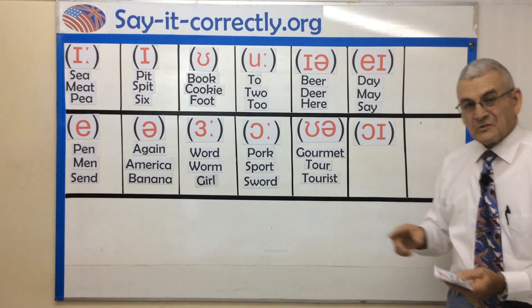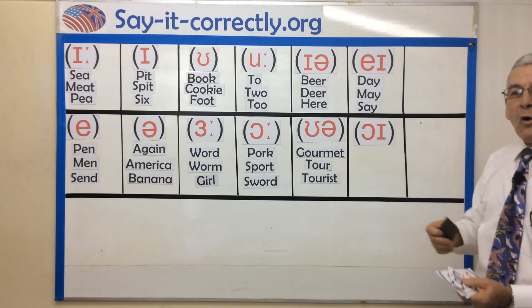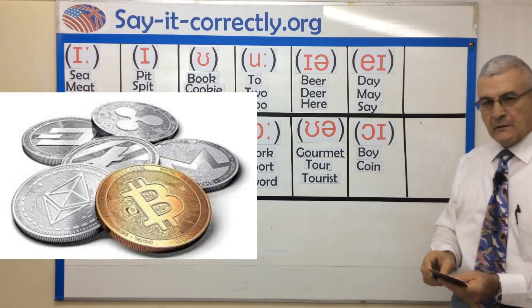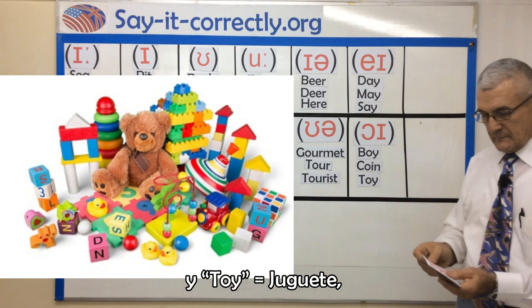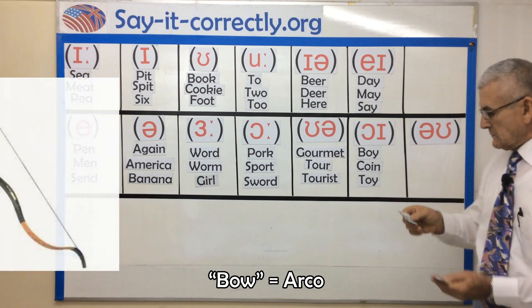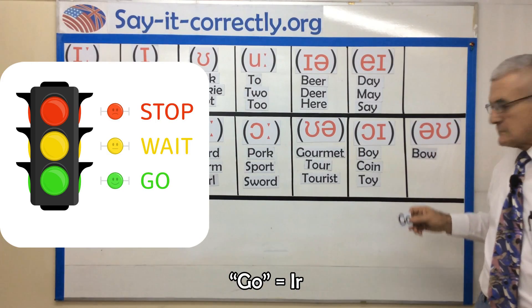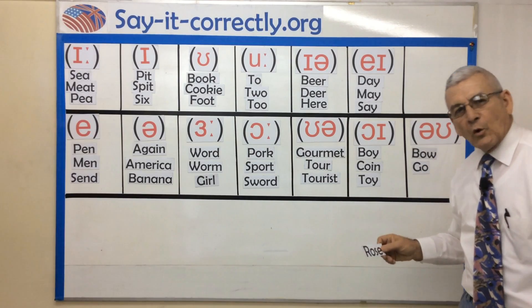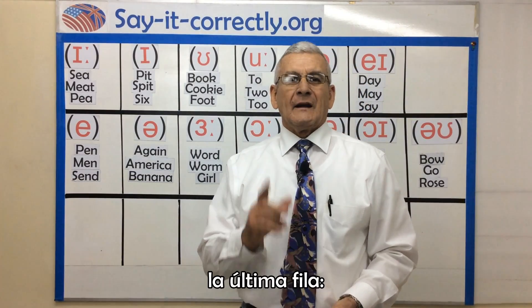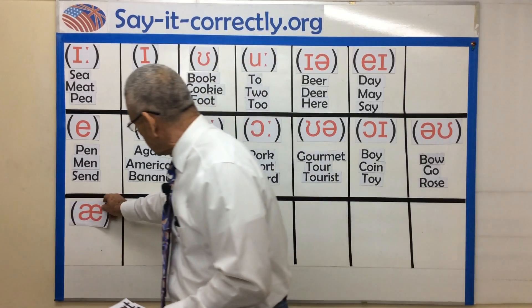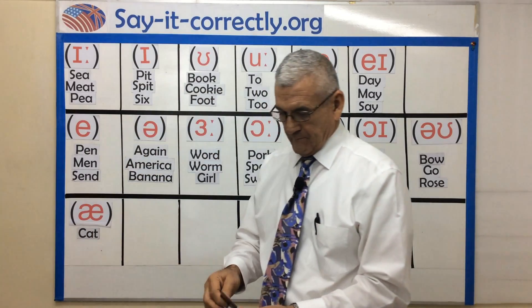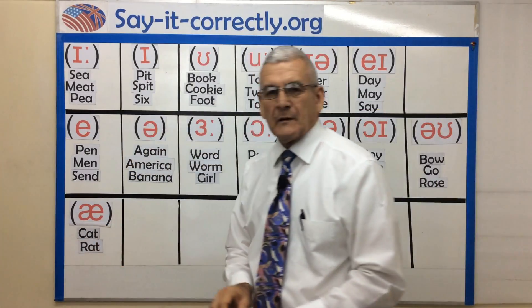This is simple — almost an O here. Boy, coin, and toy. The last sound on this row: bow, go, rose. Last row — in the word cat, rat, bat.